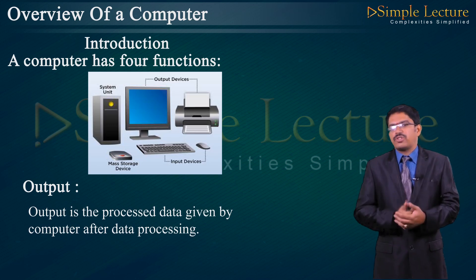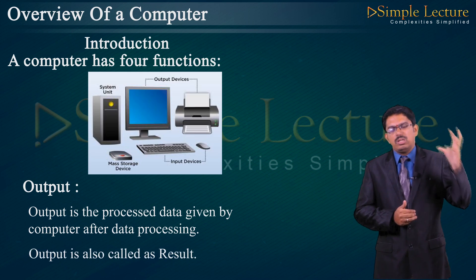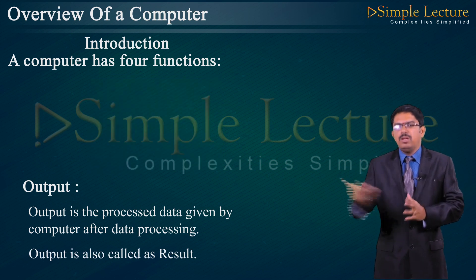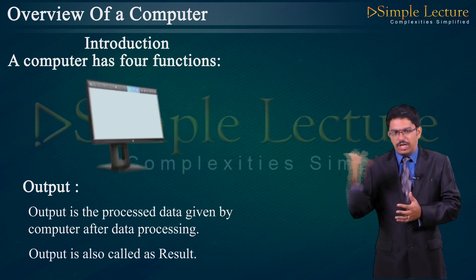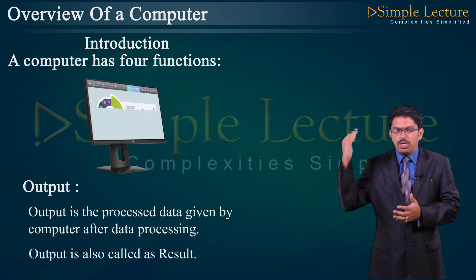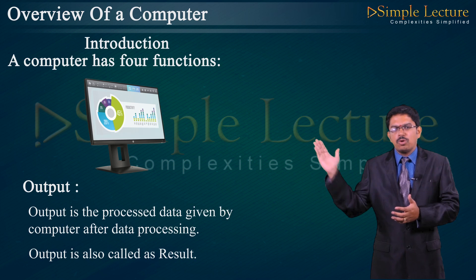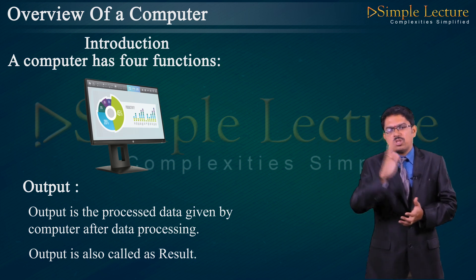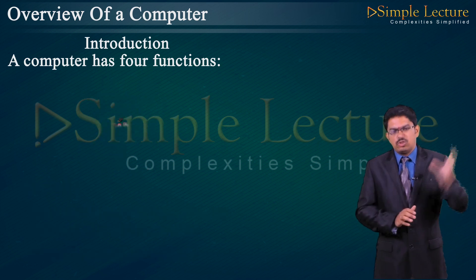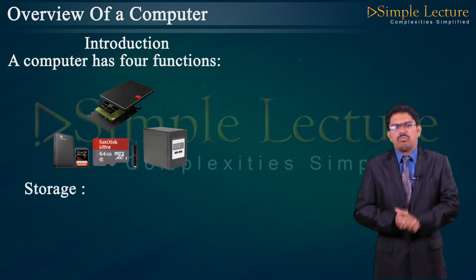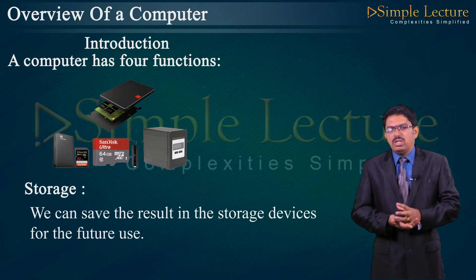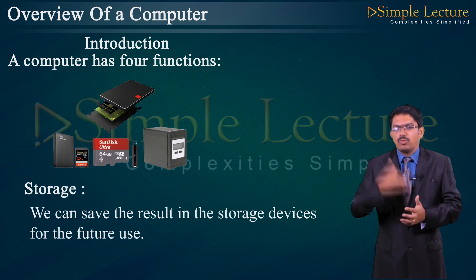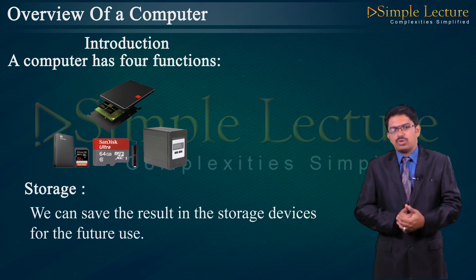Output: output is the processed data given by the computer after data processing. Output is also called result. For example, the monitor — we view the output on the screen, so the output device is a monitor. Storage: we can save the result in storage devices for further use.